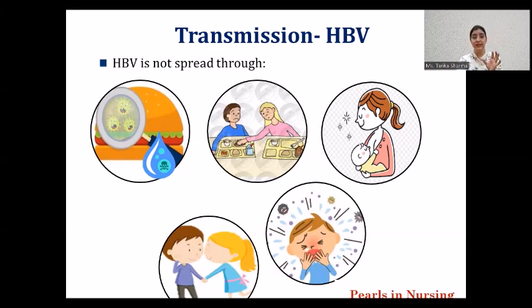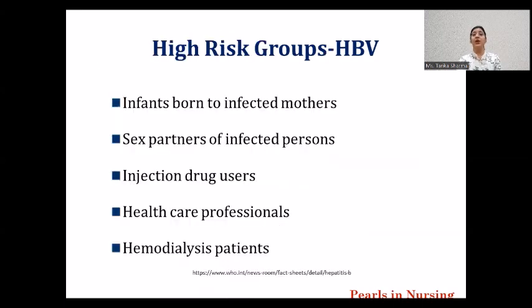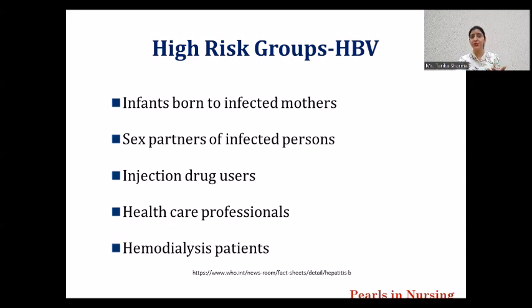The high risk group includes those individuals who have a higher risk of getting Hepatitis B infection compared to the general population. Infants born to infected mothers may also be positive with the Hepatitis B infection. Sex partners of infected persons — if one partner is positive and they are not following safe sexual practices, their partner may also be positive. Injection drug users are also at risk, because people who abuse drugs may sit in a common room, inject drugs in a group, and share needles — if one person is positive, others can also get infected.